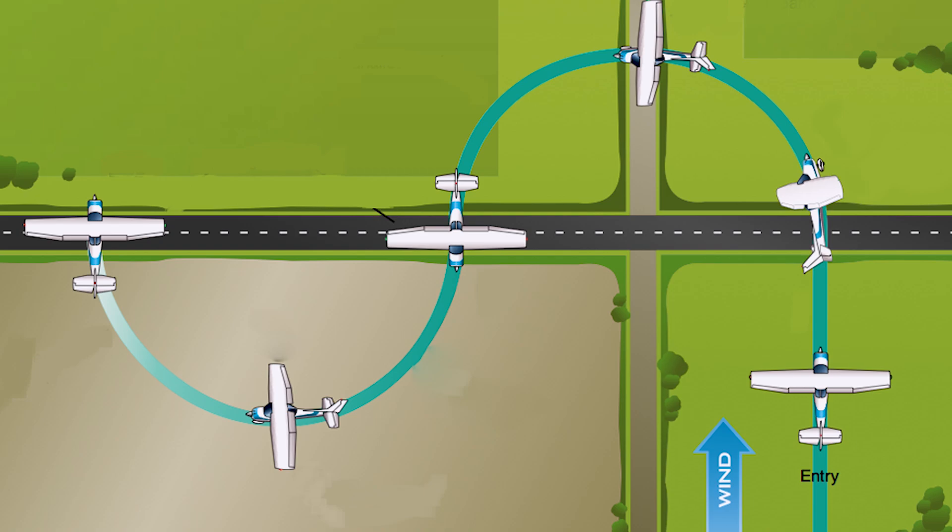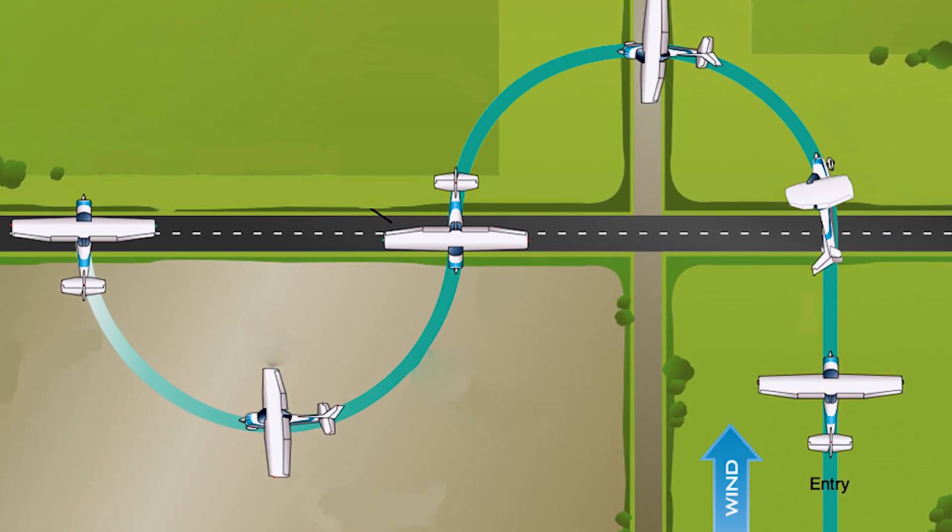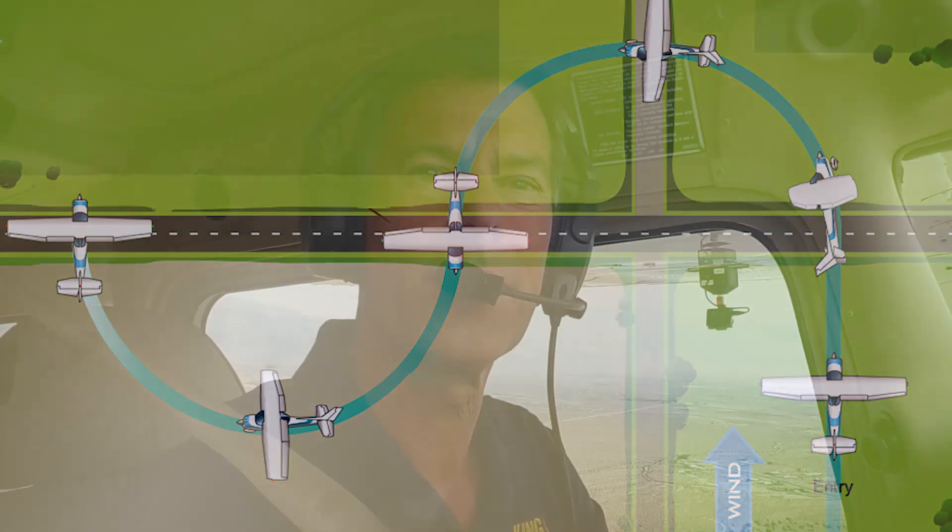Now let's talk about S-turns. S-turns across a road are one of the three ground reference maneuvers, along with a rectangular course and turns around a point. S-turns across a road is another way for pilots to demonstrate their skills in correcting for wind to fly a precise ground track.